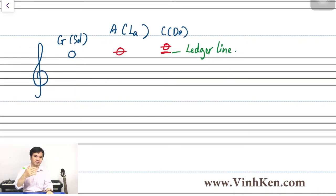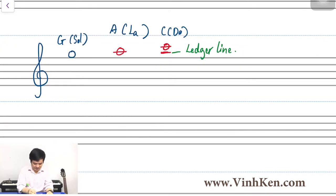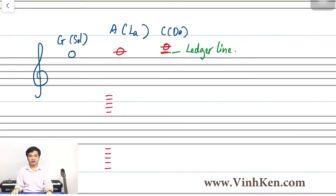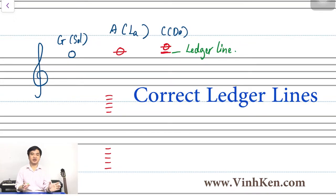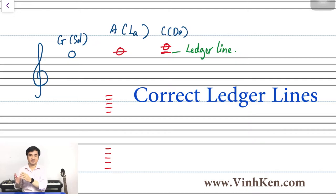We need 5 lines above the staff and 5 lines below the staff — 1, 2, 3, 4, 5 above, and 1, 2, 3, 4, 5 below. And how do we draw ledger lines? Very easy. Just remember: make the line length long enough to fit the note.